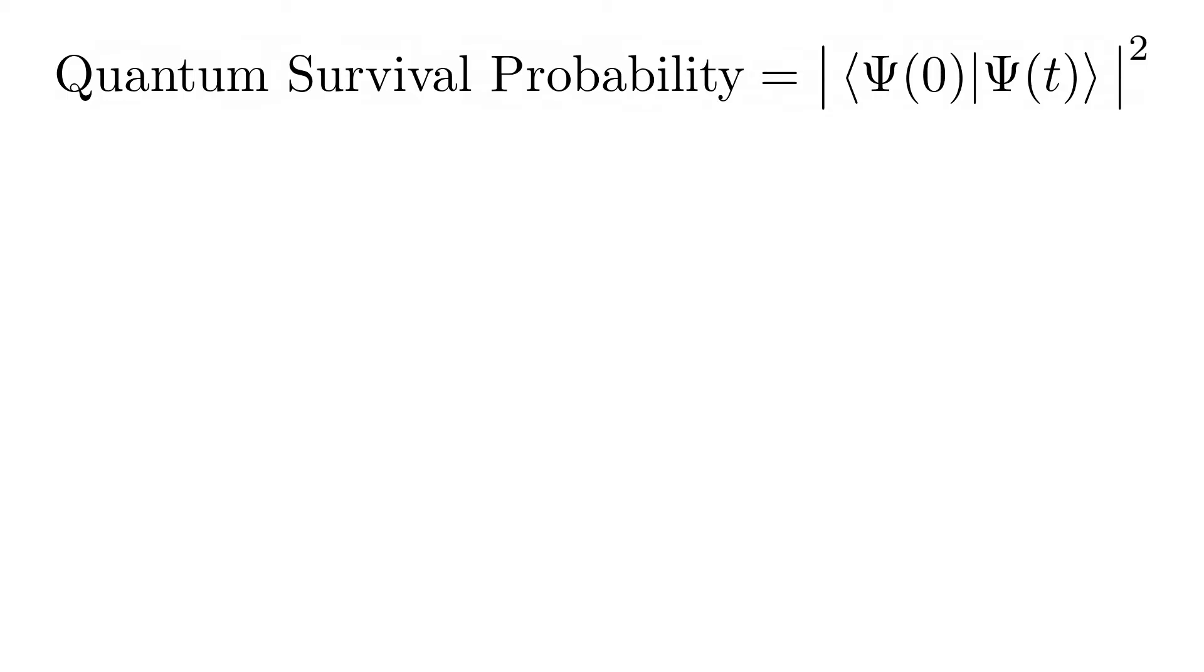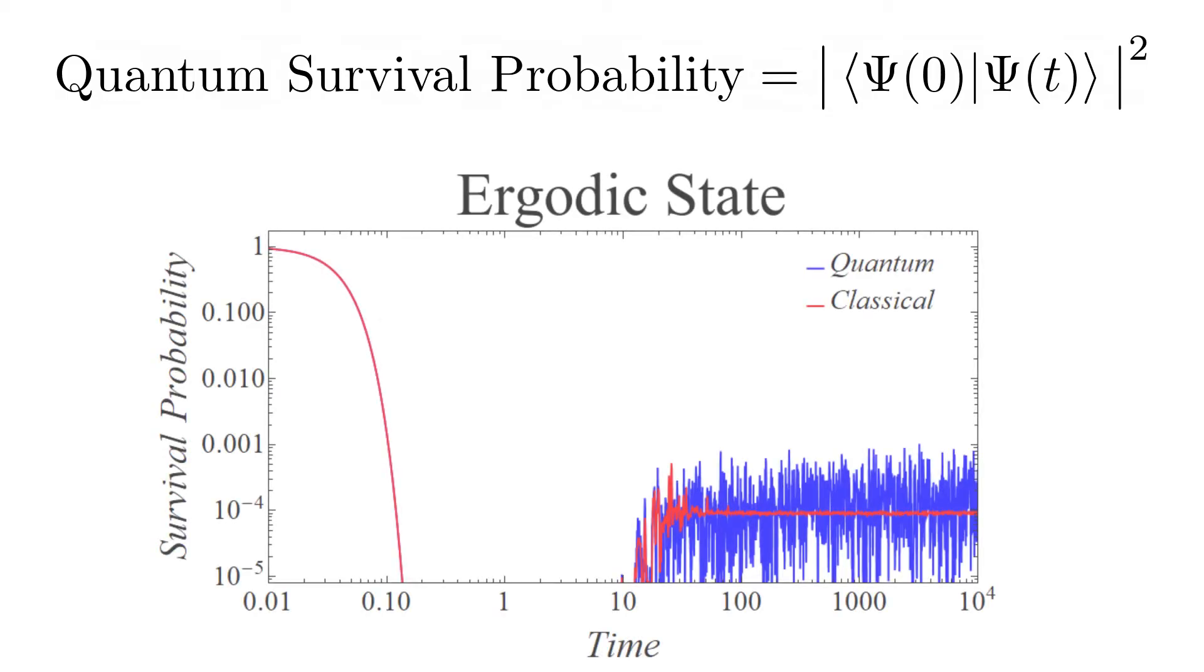Our initial states are coherent states, which have the same Gaussian phase space distributions used in the classical version. We show the survival probabilities for the ergodic state that you just saw, classical in red and the quantum one in blue. Both start at 1, drop to 0, and finally equilibrate, with the blue line displaying quantum fluctuations.